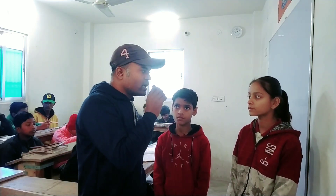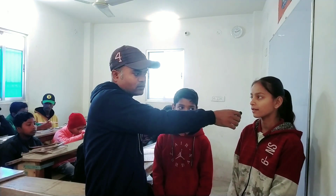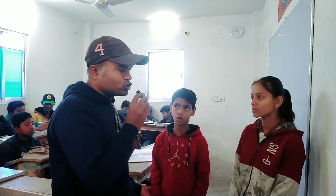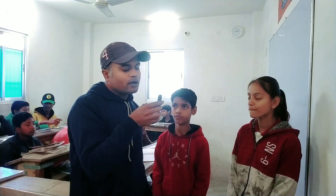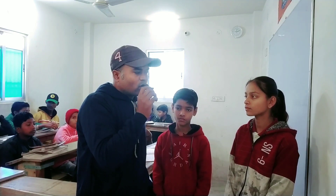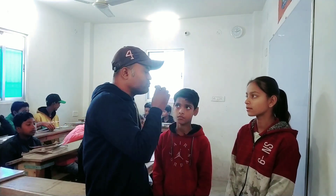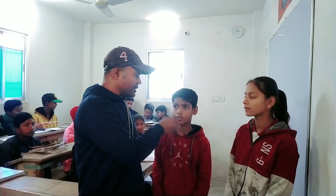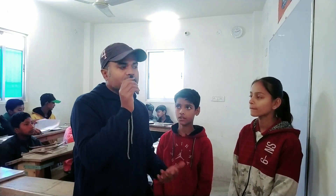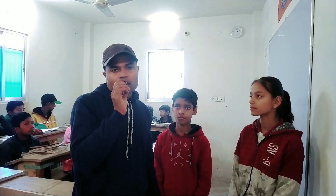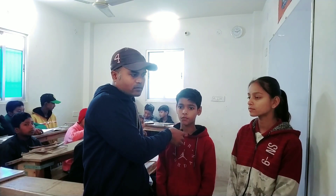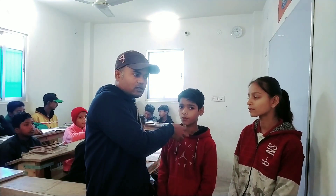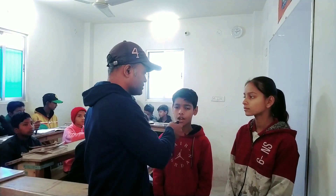Unke paas ek bhi dukaan nahi hai — They have no shop. They don't have any shop. Don't get confused, students. Uske paas do ghadi hai — They have two watches. Humare paas do bat hai — We have two bats. Unke paas ek bhi bat nahi hai — They have no bats. Humloge paas khanne ke liye bhoat kuch hai — We have a lot of things to eat. Mere paas khane ke liye nothing hai — I have nothing to eat.